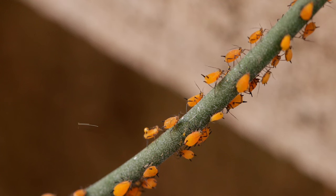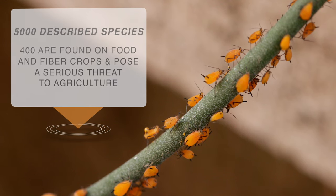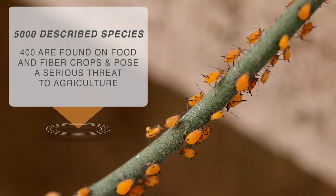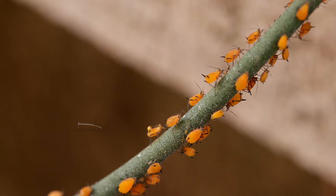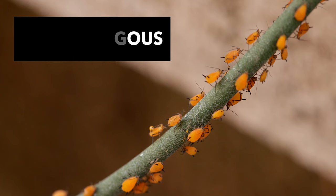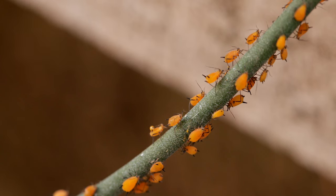About 5,000 species of aphids have been described so far. About 400 of these are found on food and fiber crops, and many are serious pests of agriculture and forestry. Many aphid species are monophagous, which means they feed only on one plant species throughout their life.